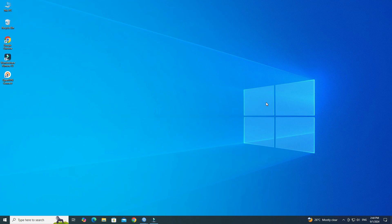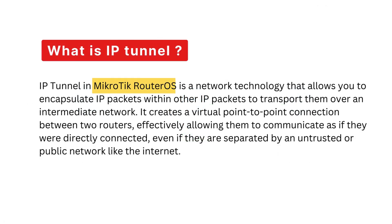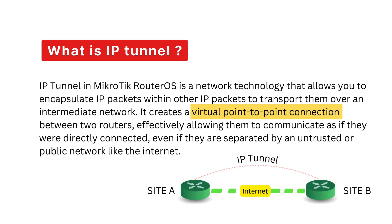Hello everyone, welcome to Wire Network. In this video, we will be learning how to configure an IP tunnel between two Microtik routers. IP tunnel in Microtik Router OS is a network technology that allows you to encapsulate IP packets within other IP packets to transport them over an intermediate network. It creates a virtual point-to-point connection between two routers, effectively allowing them to communicate as if they were directly connected, even if they are separated by an untrusted or public network like the internet.